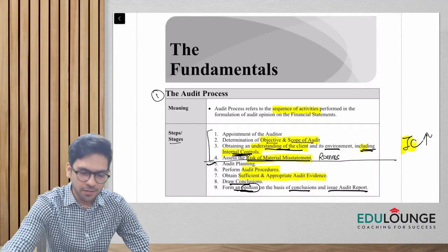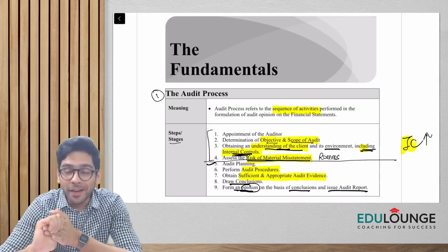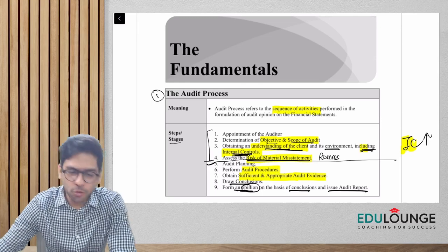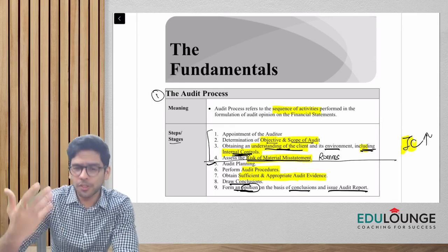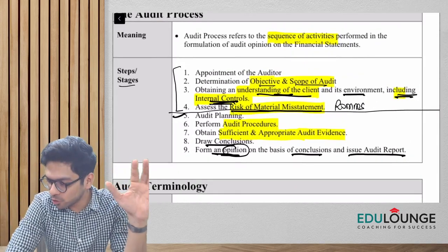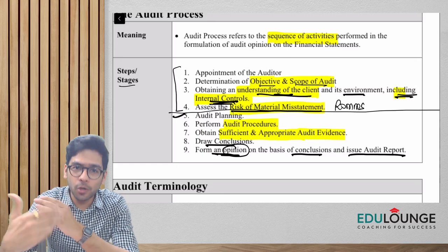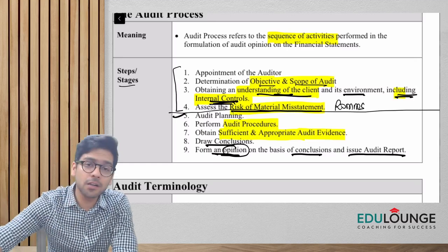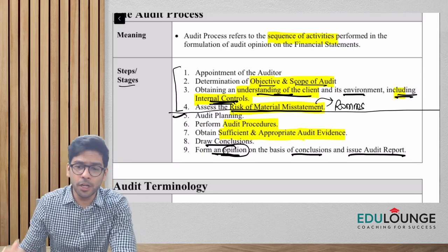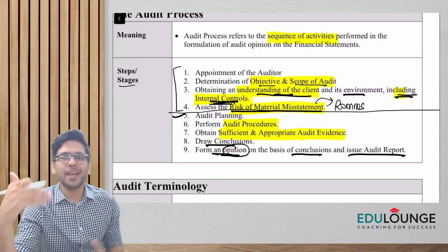In the previous session we discussed the fundamentals of audit, revising concepts from CA Intermediate. We started with the audit process: first the auditor is appointed, then the objective and scope of audit is determined, then you understand the entity and your client's internal controls, and then you assess the risk of material misstatement. Only once you assess risk of material misstatement are you in a position to plan the audit.